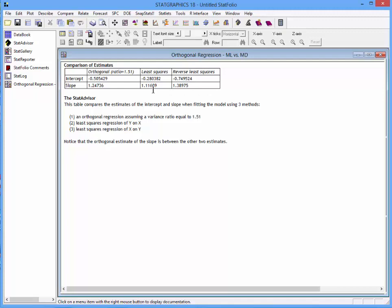With orthogonal regression, the slope is approximately 1.25. With least squares, it's 1.12, and with reverse least squares, it's 1.39. It's important that one select the proper variance ratio in order to get a good estimate of the model.